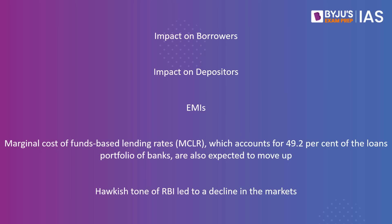What is the impact on the economy? Lending rates of banks are now expected to go up. For borrowers, with the hike in repo rates, borrowing costs are expected to increase — home loans, personal loans, and other credit facilities will also get costlier. Borrowers having floating rate interest payments will suffer more. For depositors, there will be a benefit as there is an increase in bank deposit interest rates. EMIs on vehicle, home, and personal loans will rise. Marginal cost of funds-based lending rates, which account for 49.2% of the loan portfolio of banks, are also expected to move up. Finally, the hawkish tone of the RBI led to a decline in the market as well.